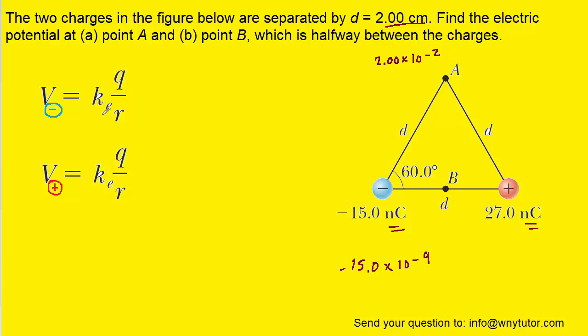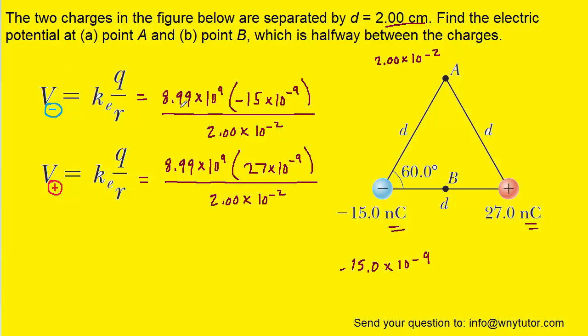So we'll plug in the known values for the negative charge and also for the positive charge. Notice that for both calculations, we're using the value of 8.99 times 10 to the ninth, and that represents the standard value of Ke.